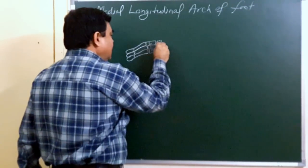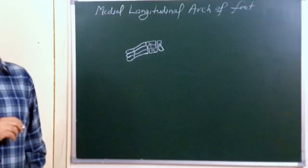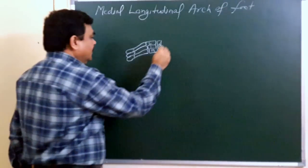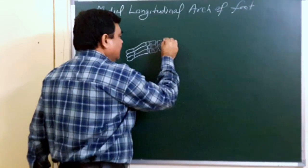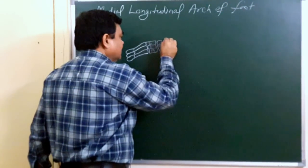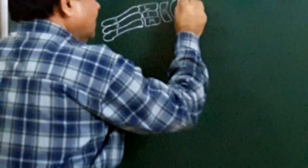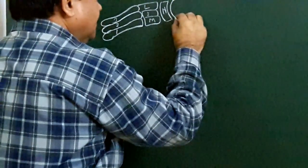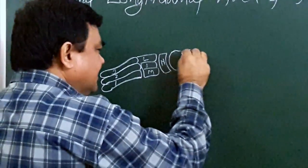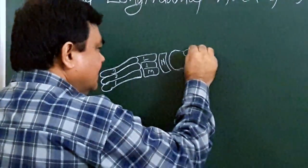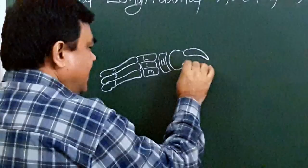This bone is the navicular. This is the navicular bone. And here is the head of talus.